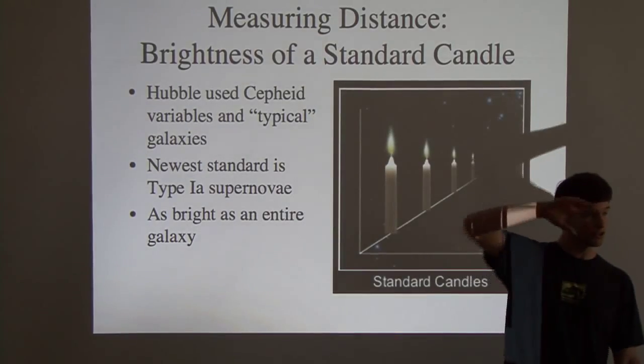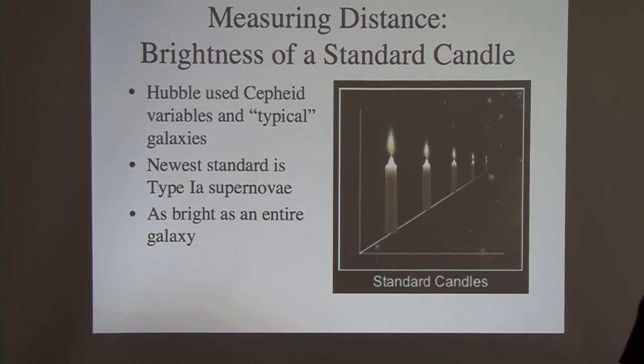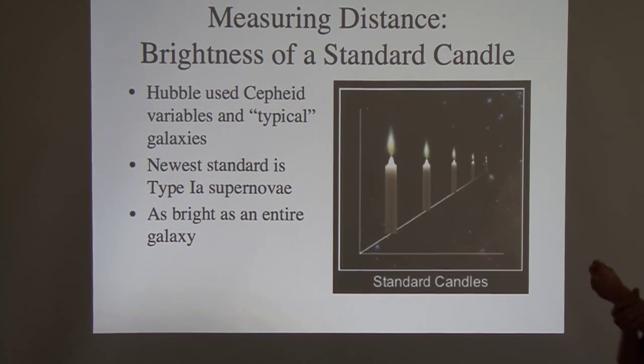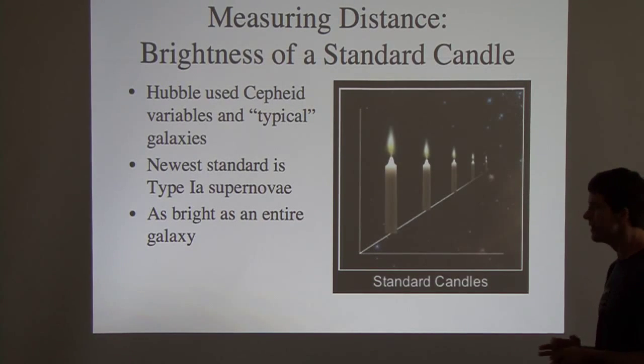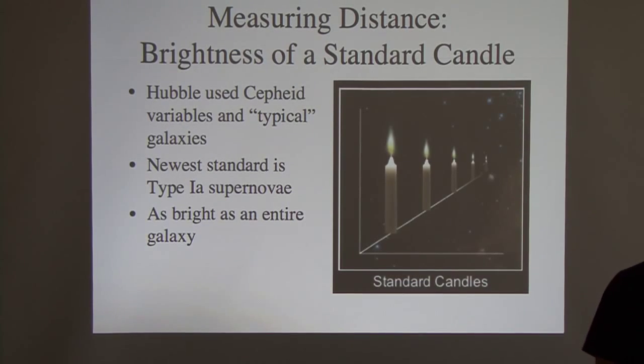Hubble was using those variable stars in relatively close galaxies and looking at how their light changed over time to know the absolute brightness of the star. And then saying that was his standard candle. He said, I think I know how bright that star is, how much luminosity it's got, how much light it's actually putting out, and then I'll use how bright it appears to measure its distance. The other thing he did was he, again, he was using the best tools he had, he said, let's just say that all galaxies are about the same.